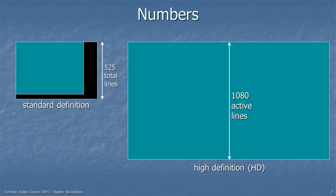Let's talk about numbers first. In the old days of standard definition television, we talked about the total number of lines, including those used for synchronization — that's the black area shown. In the U.S. we had 525 total lines; in Europe, 625 total lines. In high definition, we stopped talking about total lines and started talking about active lines — those carrying picture information. So we talk about 720 or 1080 active lines for high definition.